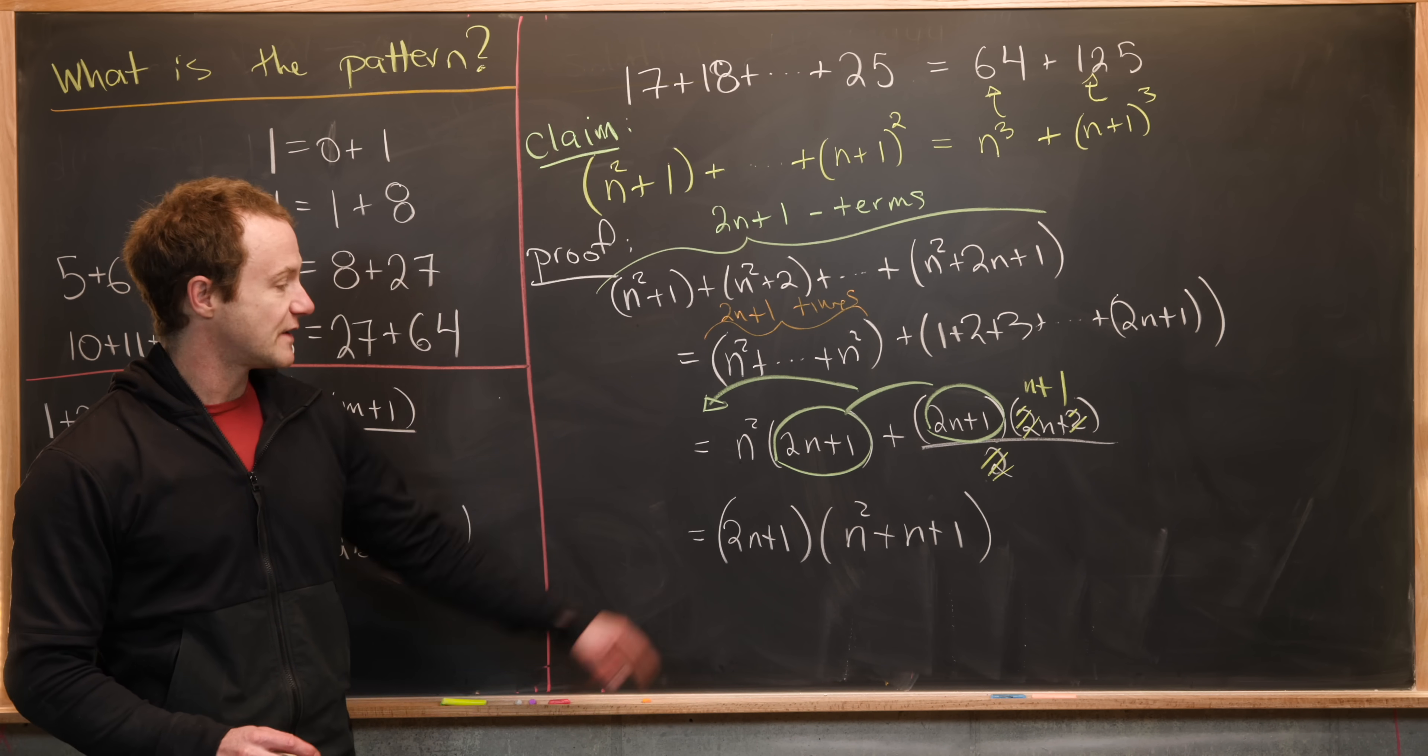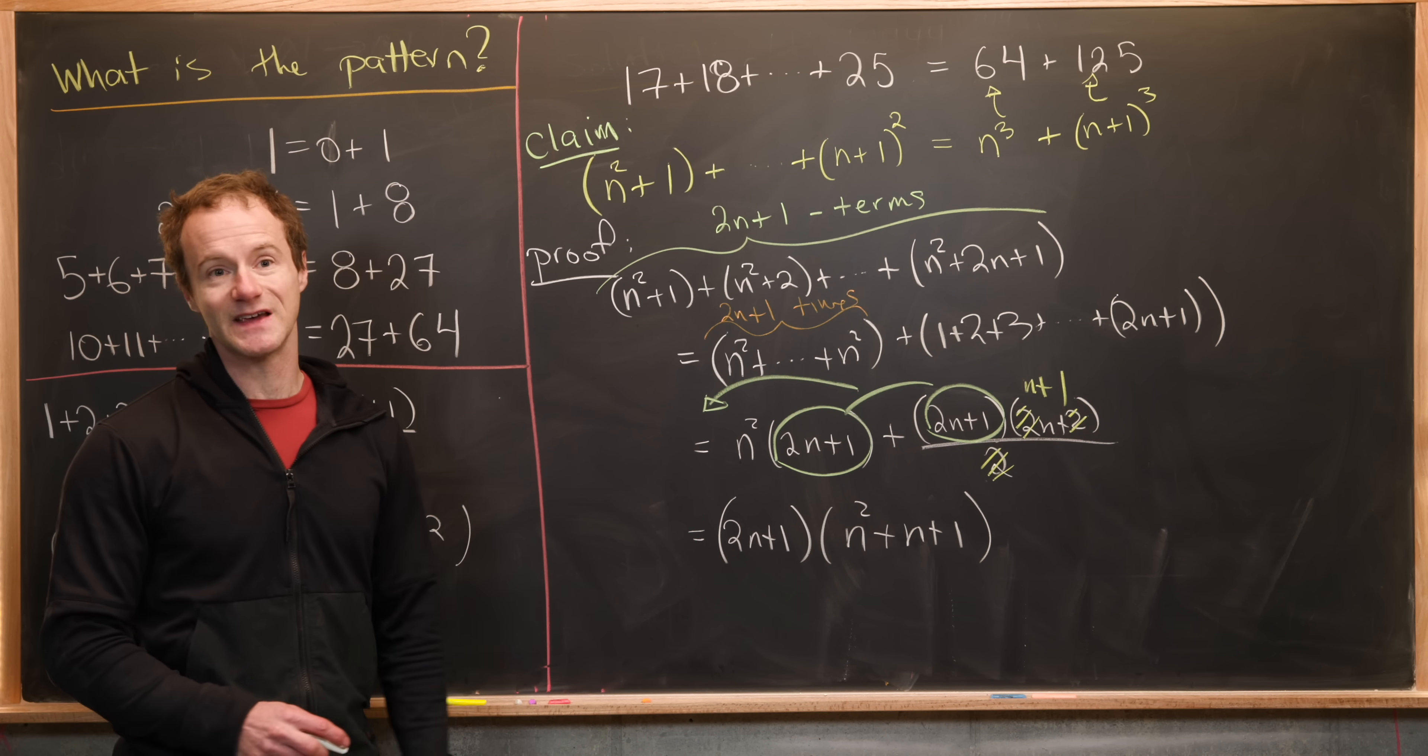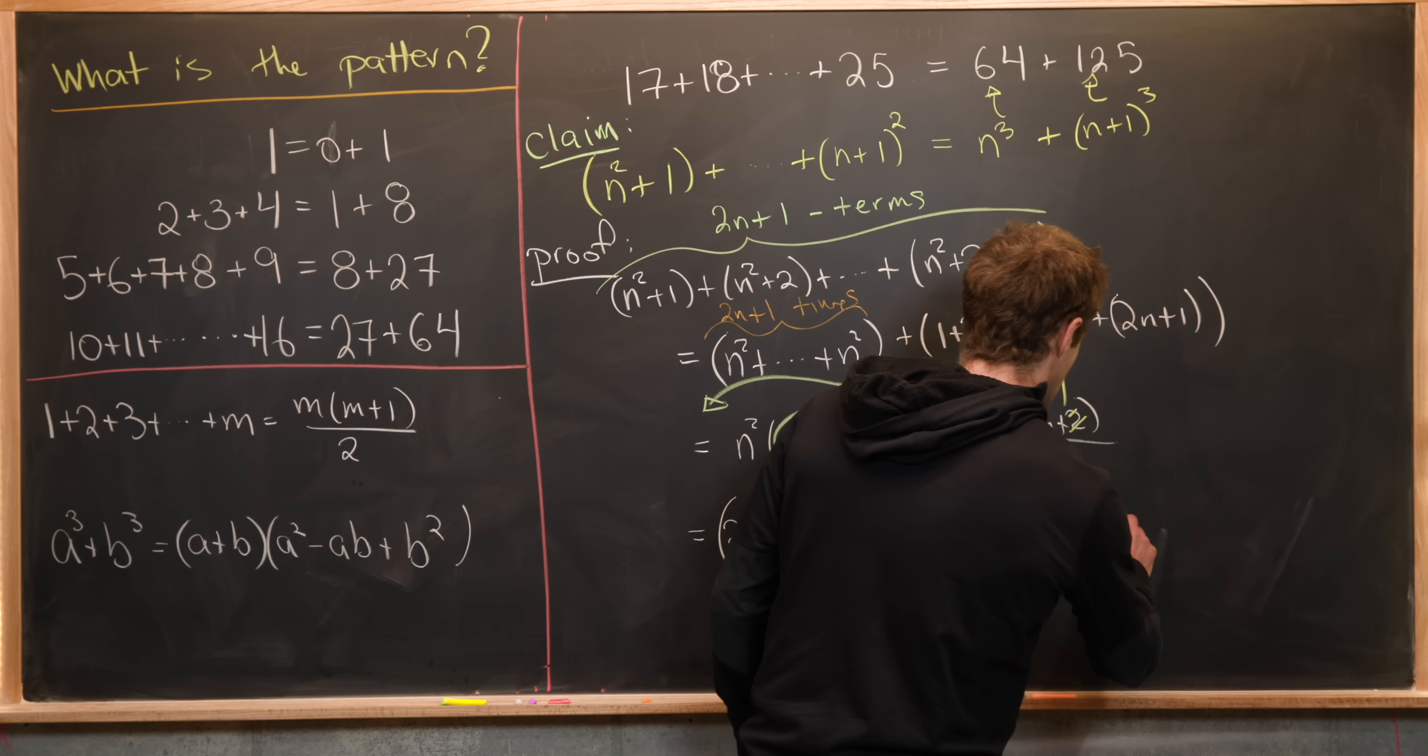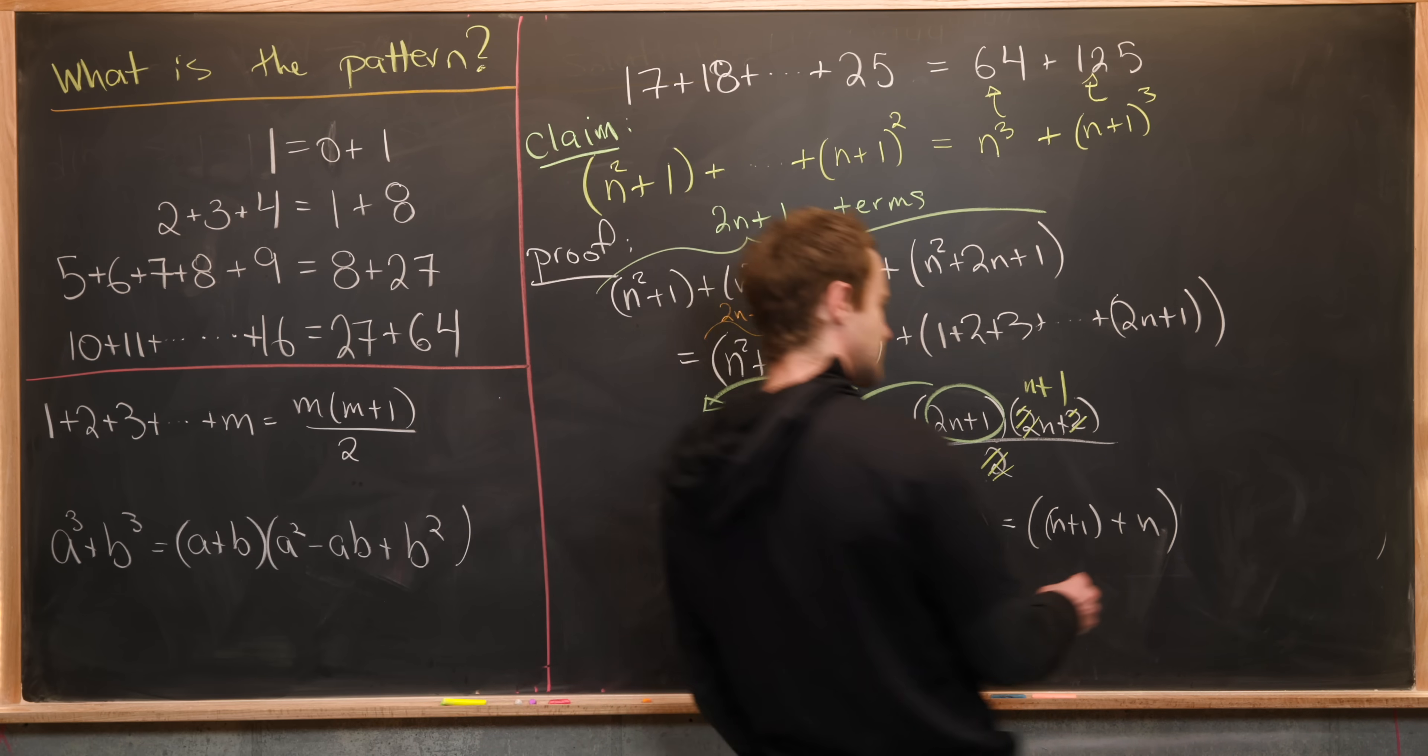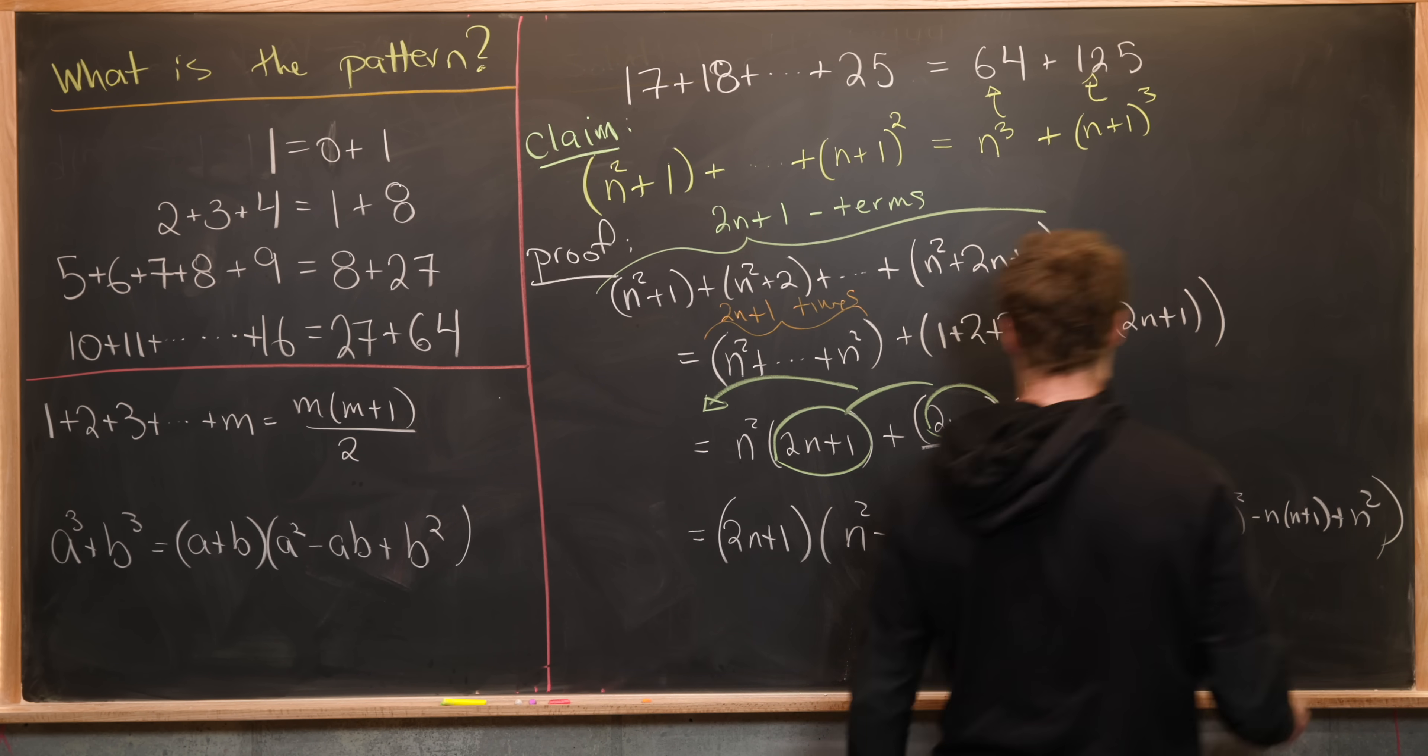Now I want to rewrite this slightly in a way so that we can use this cubic formula over here. So let's take this n plus two n plus one and rewrite it as n plus one plus n like that. And then I'll take the second term and rewrite it in a tricky way. So I'm going to rewrite it as n plus one quantity squared minus n times n plus one plus n squared.